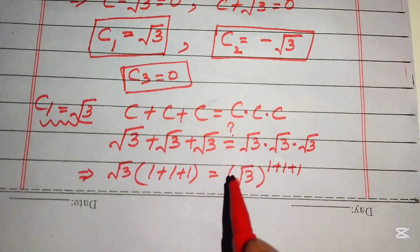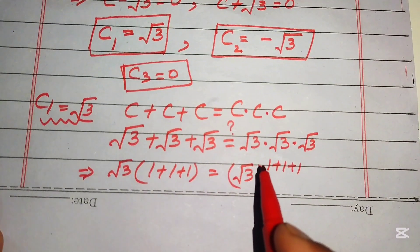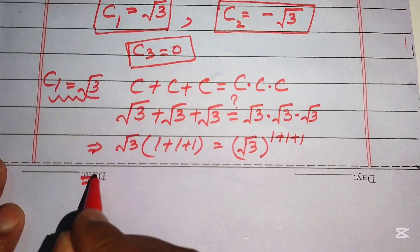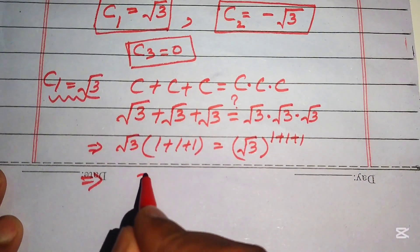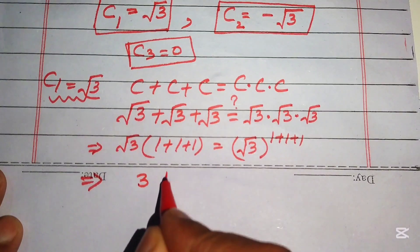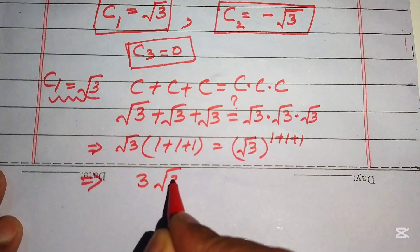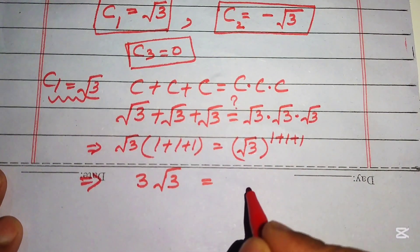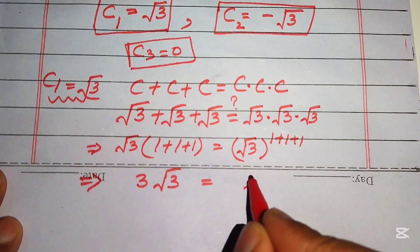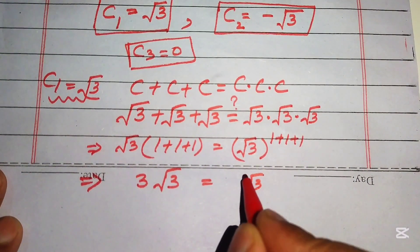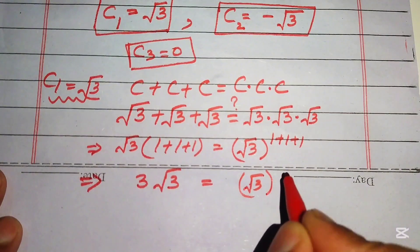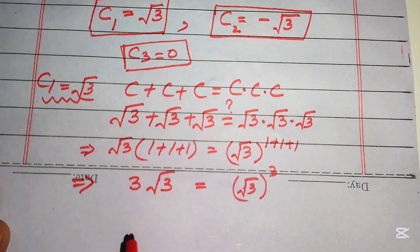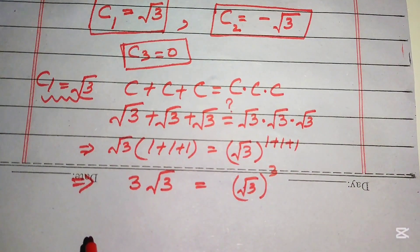Since the bases on each term are the same, this simplifies to three times square root of three on the left, and square root of three to the power of three on the right.